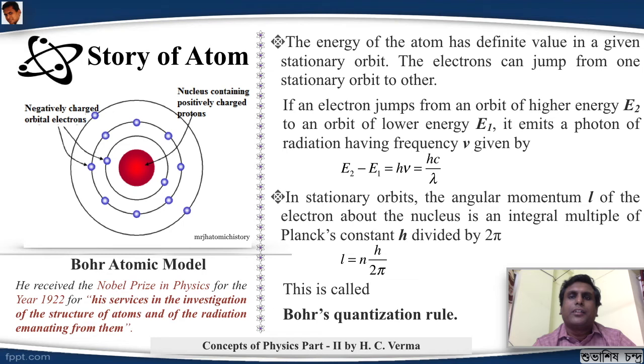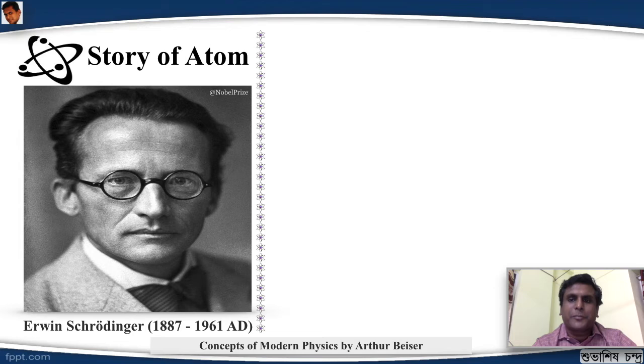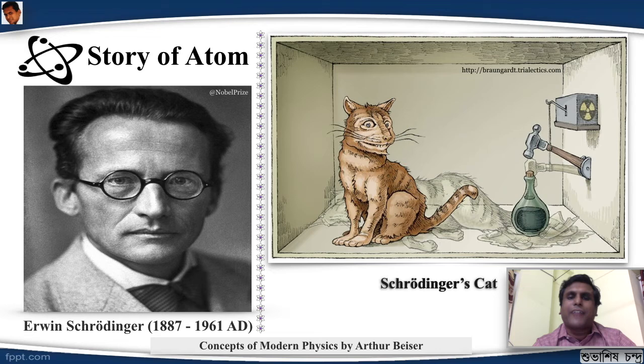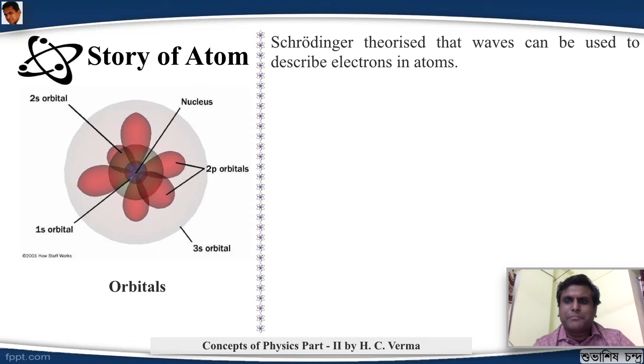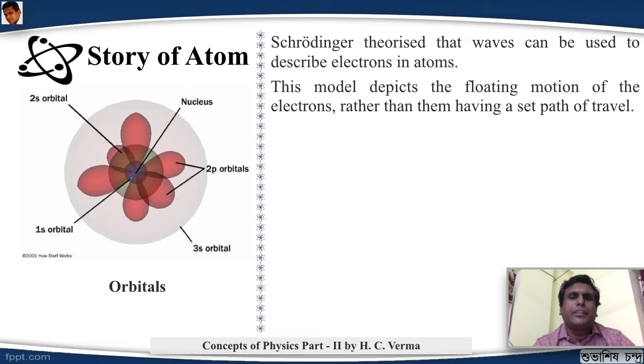Next guy is this guy, Erwin Schrödinger. He was an Austrian physicist and is popularly known for his Schrödinger's cat thought experiment. Well, we are not going to look into the Schrödinger's cat thought experiment, but you might look into it - it's a very interesting thought experiment. We will look what he did for the atomic theory. Schrödinger theorized that waves can be used to describe electrons in atoms. This model depicts the floating motion of the electrons rather than them having a set path of travel. So Bohr's orbits were fixed; he said that they will have a floating motion.